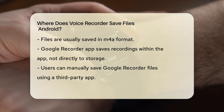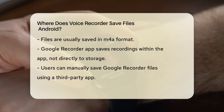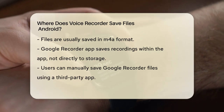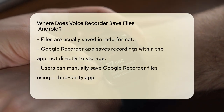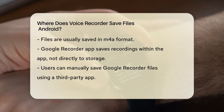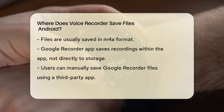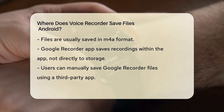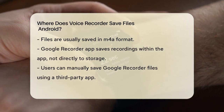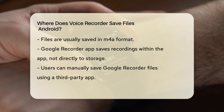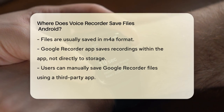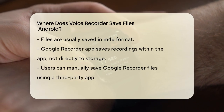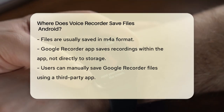For the Google Recorder app, things are a bit different. By default, the Google Recorder app does not save recordings directly to your internal storage or SD card. Instead, recordings are saved within the app itself. However, you can manually save these recordings to your internal storage using a workaround.